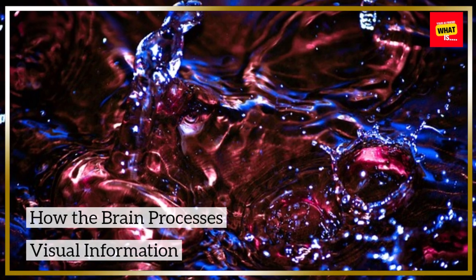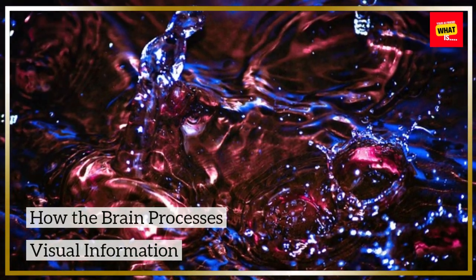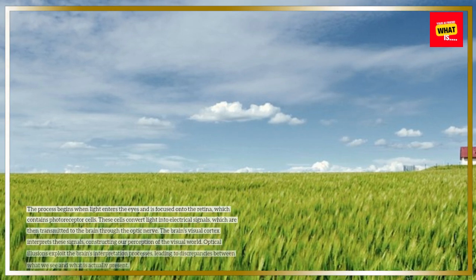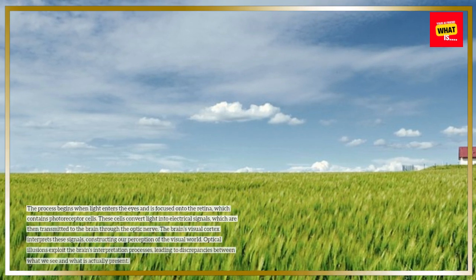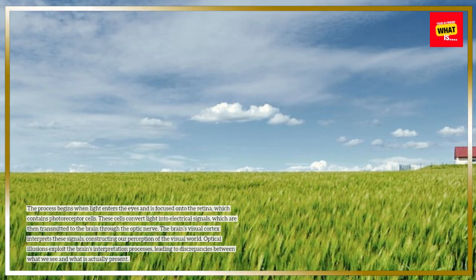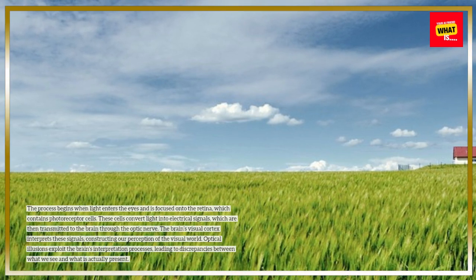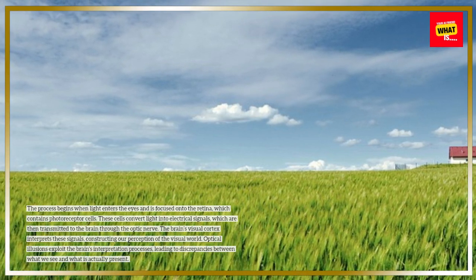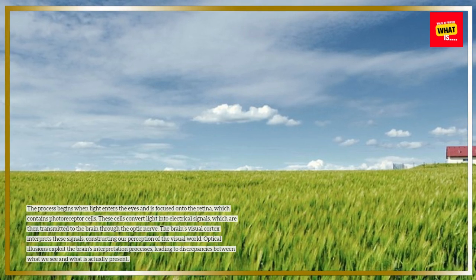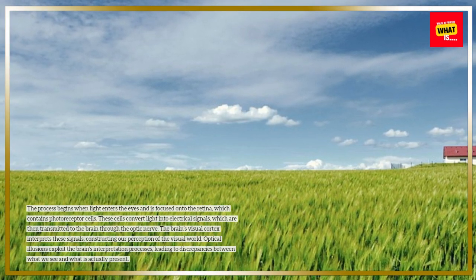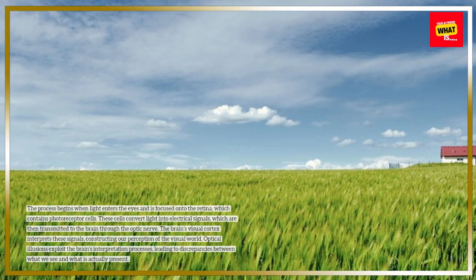How the brain processes visual information. The process begins when light enters the eyes and is focused onto the retina, which contains photoreceptor cells. These cells convert light into electrical signals, which are then transmitted to the brain through the optic nerve. The brain's visual cortex interprets these signals, constructing our perception of the visual world.